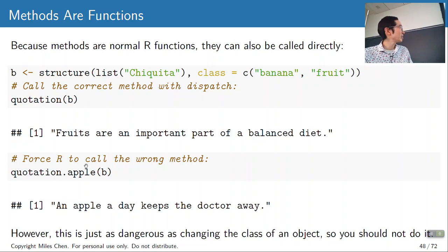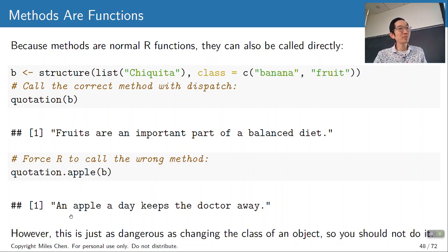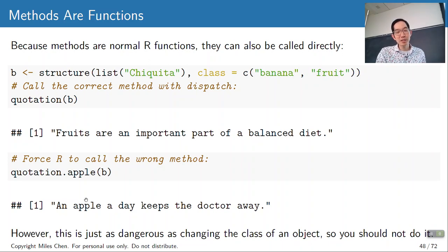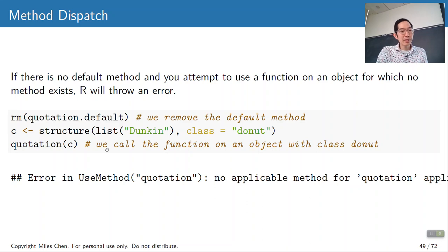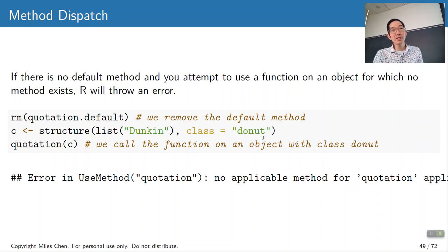These are just functions, so you could call quotation.apple on a banana class object, but that's silly. If there is no default method and R can't find quotation.donut or quotation.default, we get an error: 'No applicable method for quotation.'